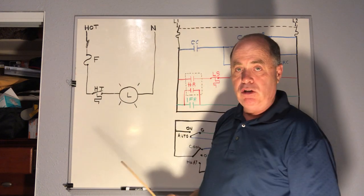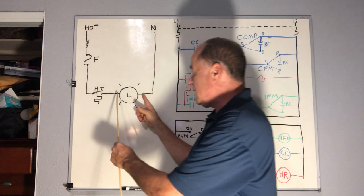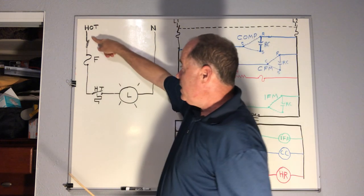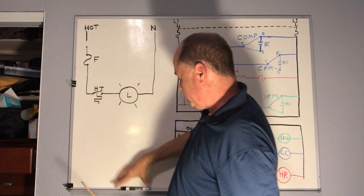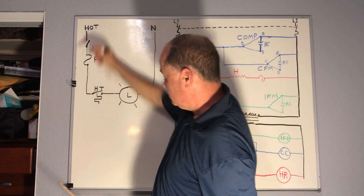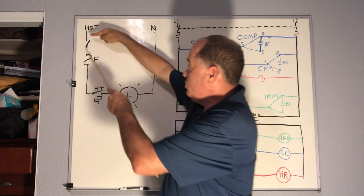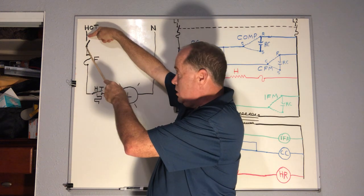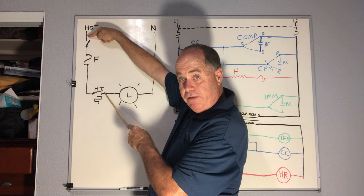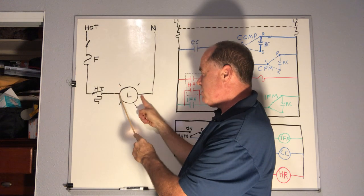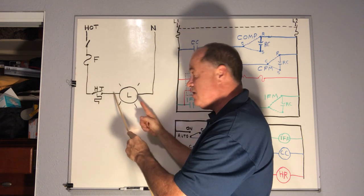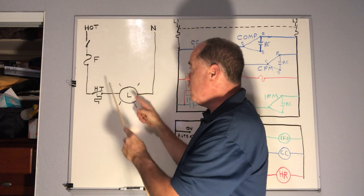Now if both of them are open, what would you read here? Zero — between this point and this point — and this point: zero, 115. What would you read here? Zero. The electrons are not getting across to this side of the load.